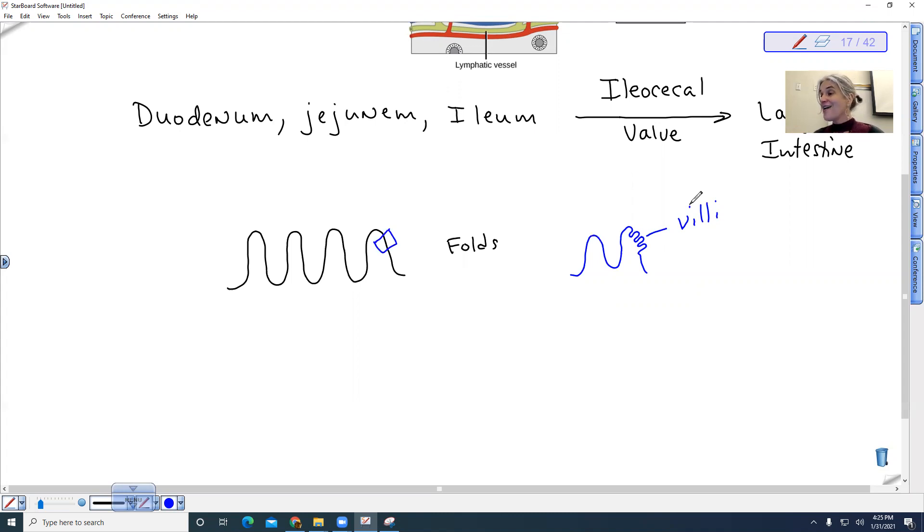The villi are composed of a layer of columnar epithelial tissue, just a single layer of column-shaped cells. And so if I were to look at this villi, I would have these column-shaped cells, and then these cytoplasmic extensions, and these are called, so this is individual cells, these are called the microvilli.